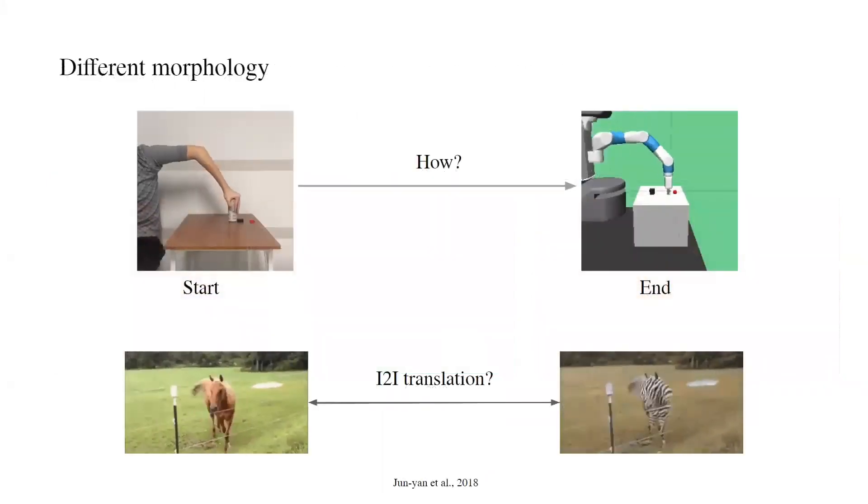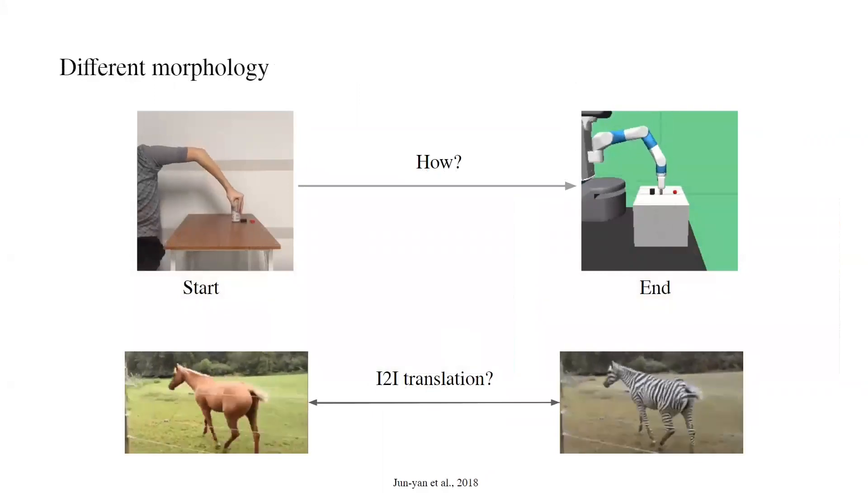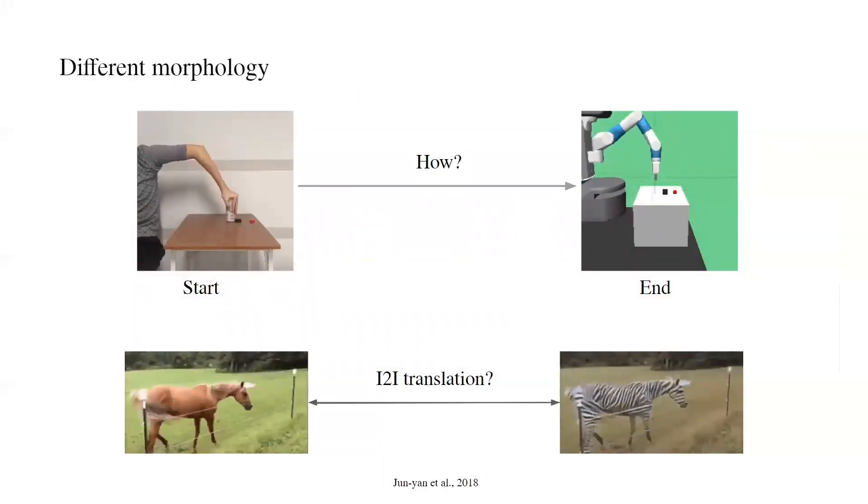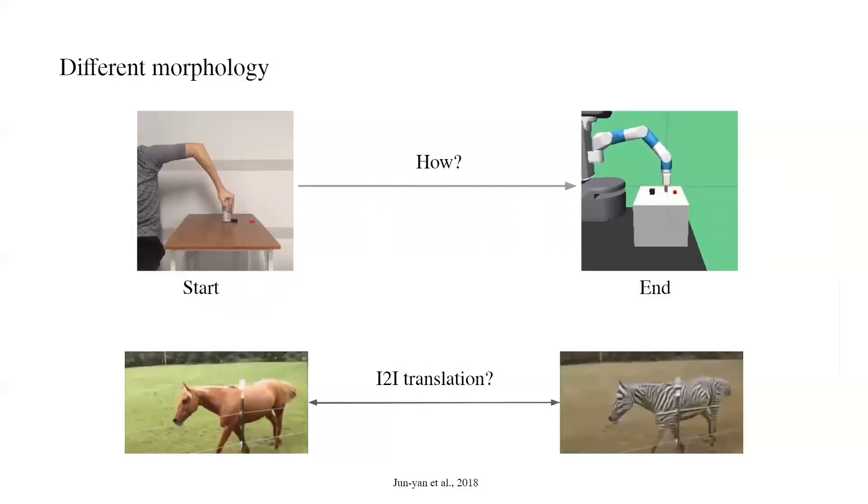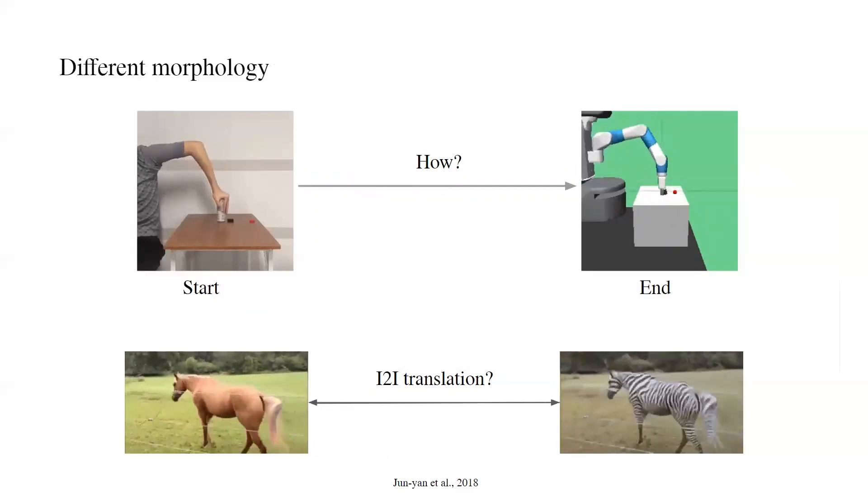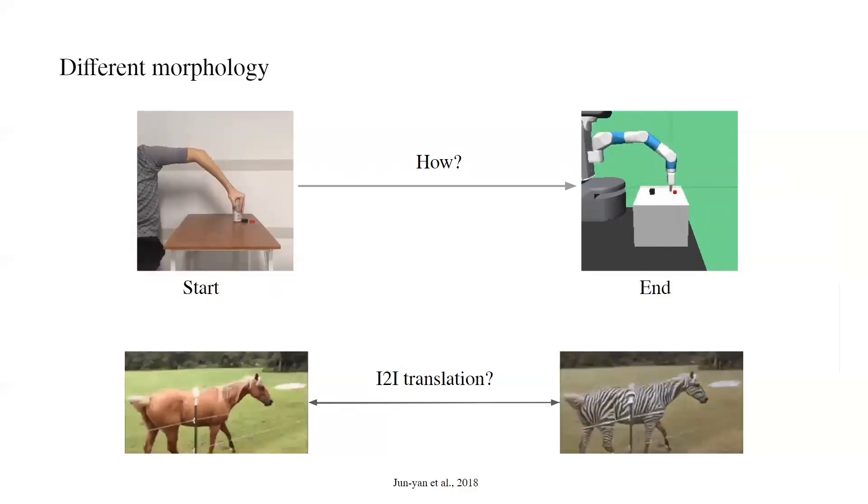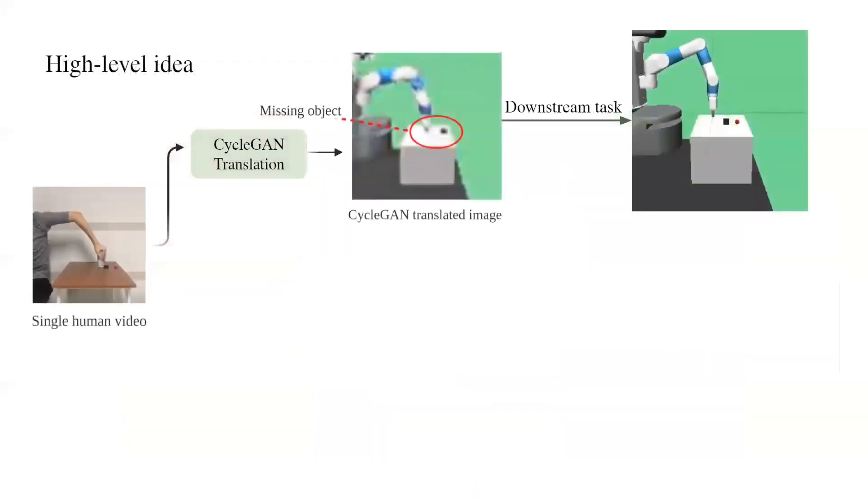The major challenge of this problem is that robot arms and human arms are different in morphology. To address this, previous methods apply image-to-image translation models to solve the domain shift issue. While vanilla translation models may capture macro image features, small but important objects can easily be missing after translation, which could lead to poor performance of the downstream tasks of robot control.